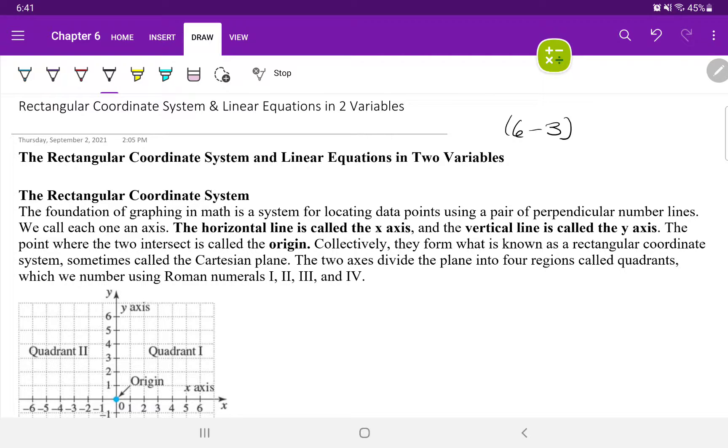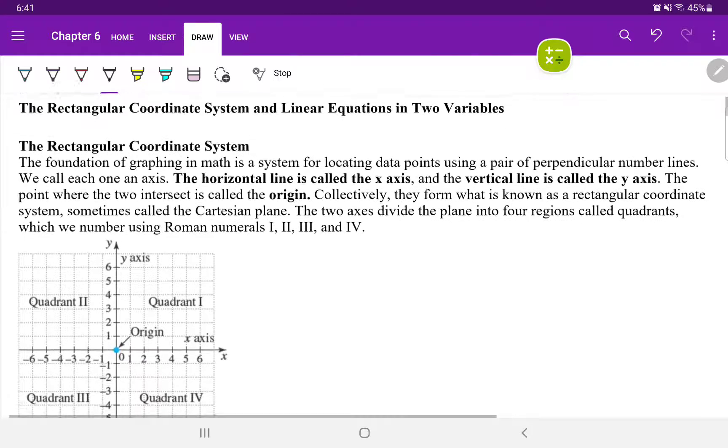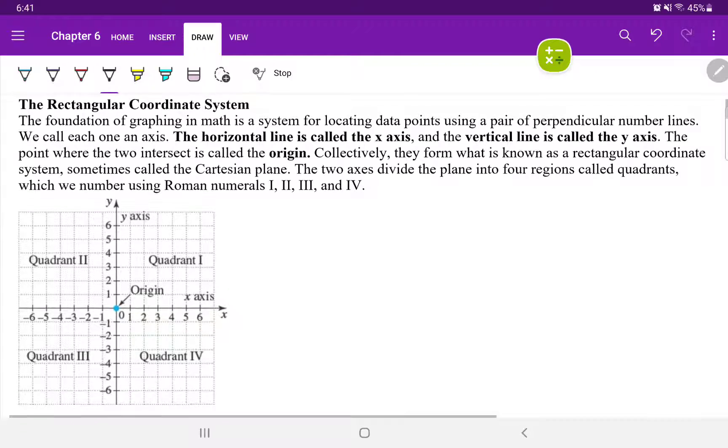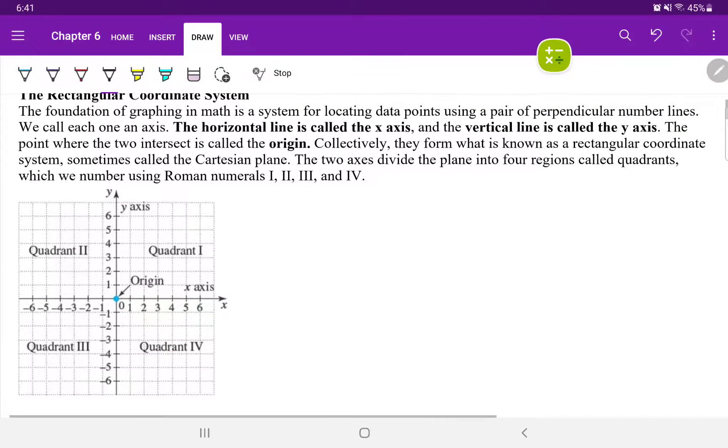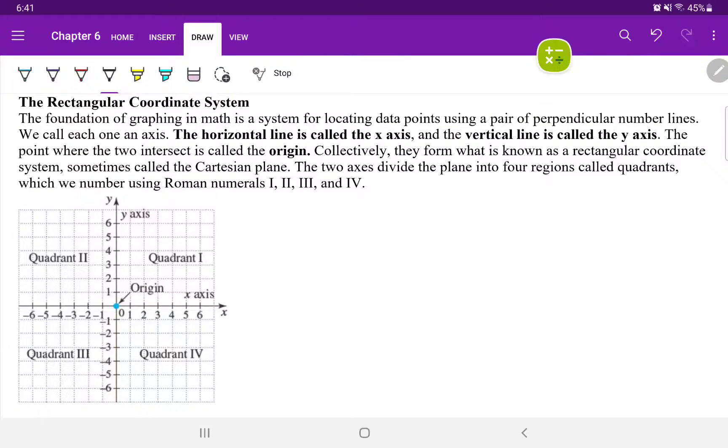Now, what is the Rectangular Coordinate System? Well, the foundation of graphing in math is a system for locating data points using a pair of perpendicular number lines. We call each one an axis, and perpendicular are where two lines intersect, making a 90-degree angle.